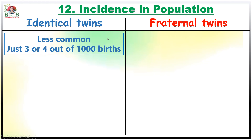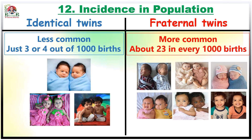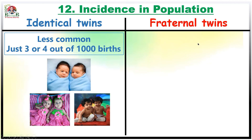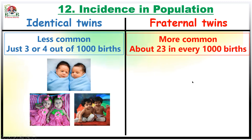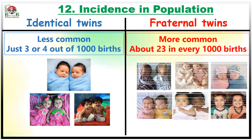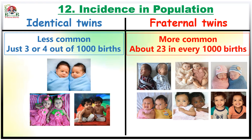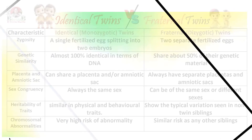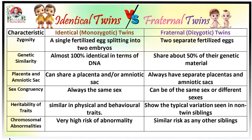The last contrasting feature is about incidence in the population. Identical twins are less common — just three to four out of every 1,000 births — whereas fraternal twins are more common, with an incidence of about 23 in every 1,000 births. That covers all 12 contrasting features between identical and fraternal twins.